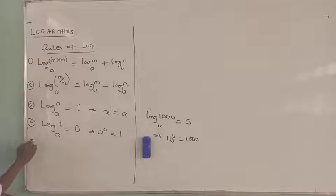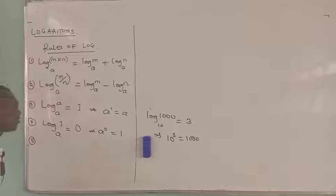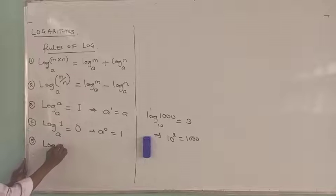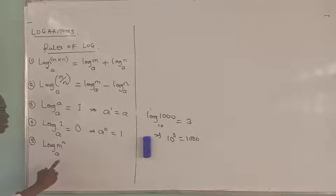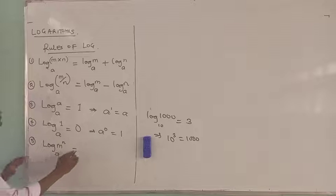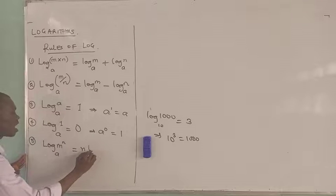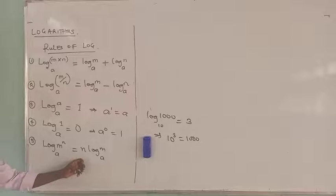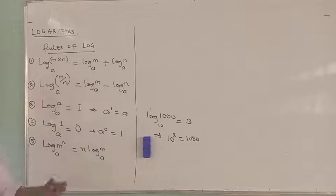For the fifth rule: if I have the logarithm of a number, say M, raised to the power of N, to base A — this rule says that the power of the number of a log should come to the back and become a multiplier. That means I should have N log M base A. So the N is going to be a multiplier of log M base A.